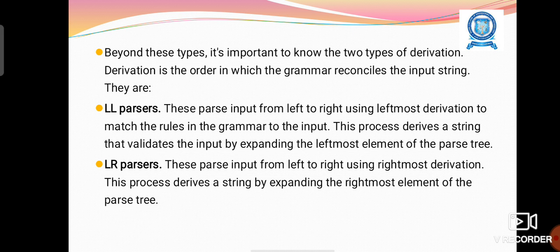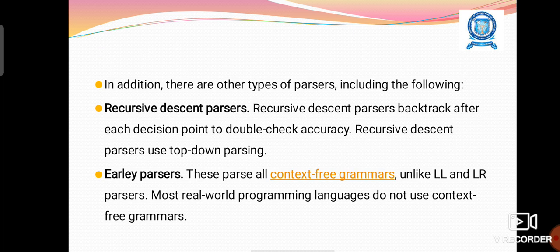Beyond these types, there are two types of derivation. Derivation is the order in which the grammar reconciles the input string. They are LL parser, LR parser. LL means these parsers input from left to right using leftmost derivation to match the rules in the grammar to the input. LR, these parsers input from left to right using leftmost derivation.